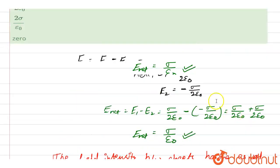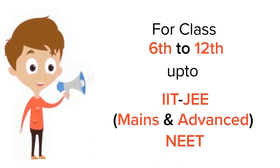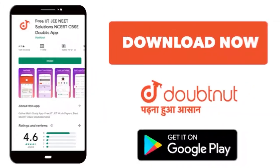So this is the solution. So the correct answer is sigma upon epsilon naught. For class 6 to 12, IIT-JEE and NEET level trusted by more than 5 crore students, download Doubtnut app today.